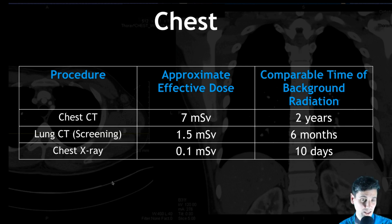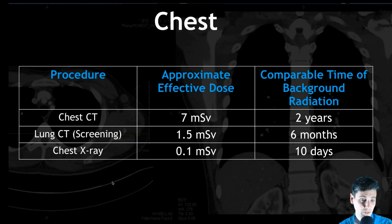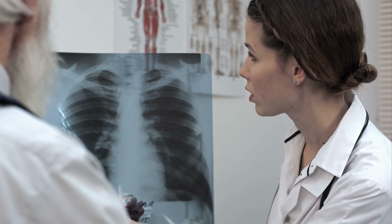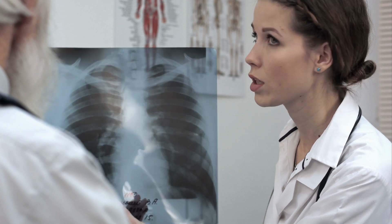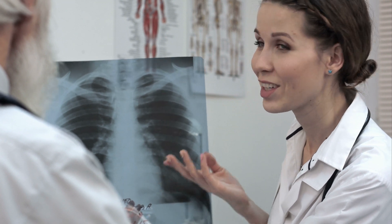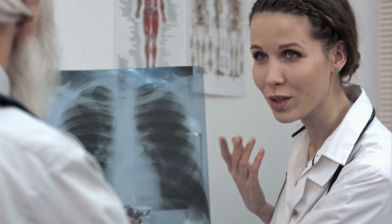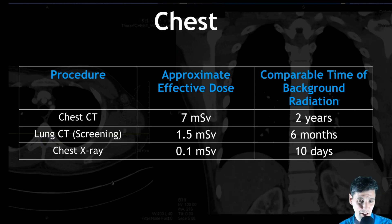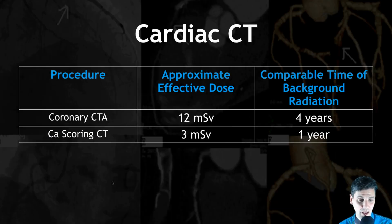In the chest, a chest CT is about seven millisieverts — about two years, a little bit more than two years. A lung CT for screening is 1.5 millisieverts or lower, which is about six months. A chest x-ray is about 10 days of equivalent background radiation dose.